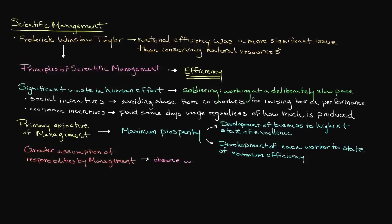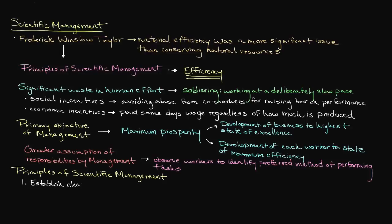This determination would be made based upon observing workers to identify inefficiencies and track the amount of time it took for workers to complete certain tasks. Once enough data was collected, management can then establish a clear set of rules to help workers accomplish their tasks in the most efficient manner. Once these rules were created, management then had the responsibility to train and develop workers in accordance with these procedures.